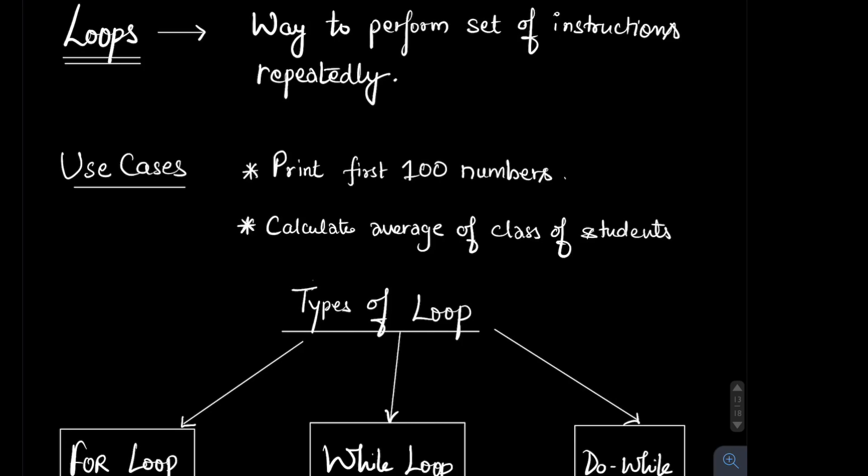There are very common use cases. For example, if we want to print the first hundred numbers, what we have discussed up to now, the only way to do it is to write multiple couts. We'll write cout one, two, three, and so on. It's a very hectic way to write code for such a simple problem statement.